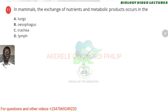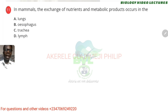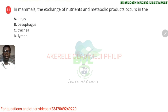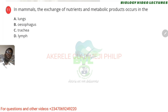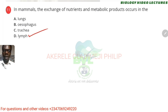In mammals, the exchange of nutrients and metabolic products occurs in — nutrients are never exchanged in the lungs, only gaseous exchange. Oesophagus — no. Trachea — no. We are left with D, which is lymph.